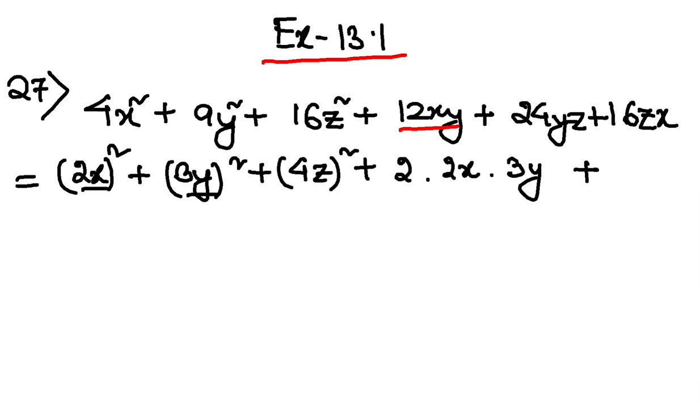2 into, now 3y into 4z because that is equal to 24yz plus 2 into 4z into 2x. Done? Because 4 into 2 is 8, 8 into 2 is 16, 16zx.